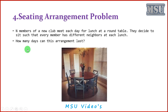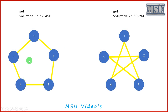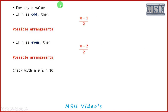The seating arrangement problem: N members of a new club meet each day for lunch at a round table. They decide to sit such that every member has different neighbors at each lunch. How many different arrangements are possible? For n=6, I represent the adjacency using edges: 1-2 means persons 1 and 2 sit together on day 1; similarly 2-3, 3-4, 4-5, 5-6, and 6-1. Then I interchange: 1 is connected to 3, 3 to 5, 5 to 2, 2 to 6, 6 to 4, and 4 to 1. So there are two different solutions. By using graph, you can identify all possible results for any n value.